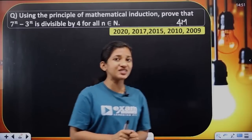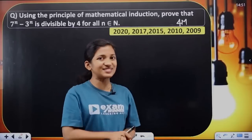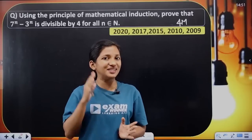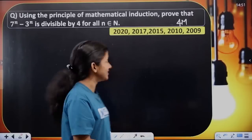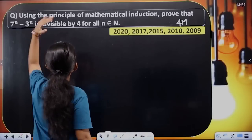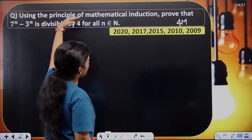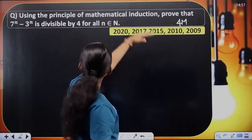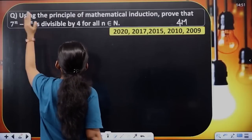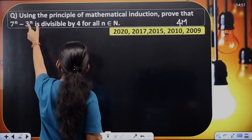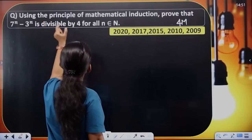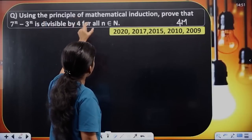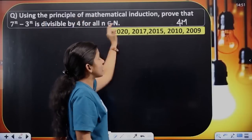In the previous question paper, we have to solve it. We have to solve it in 4 marks. Using the Principle of Mathematical Induction, prove that 7 raised to n minus 3 raised to n is divisible by 4, for all n belonging to N.